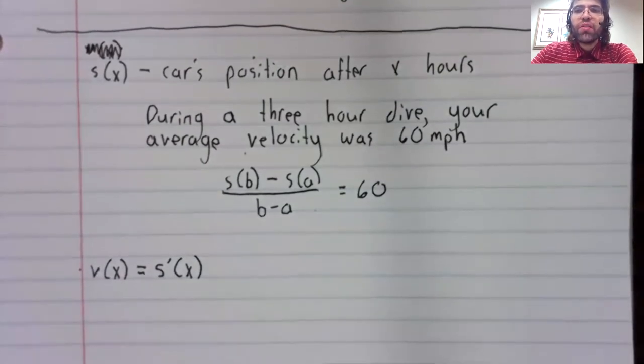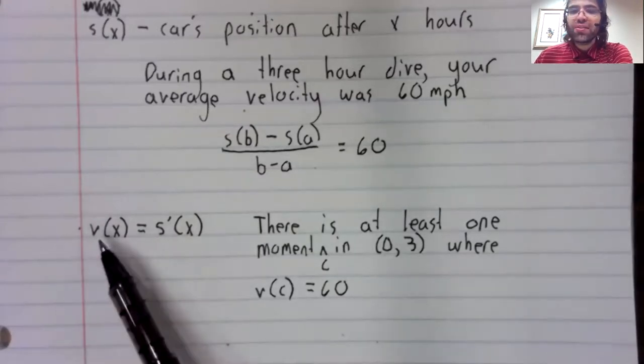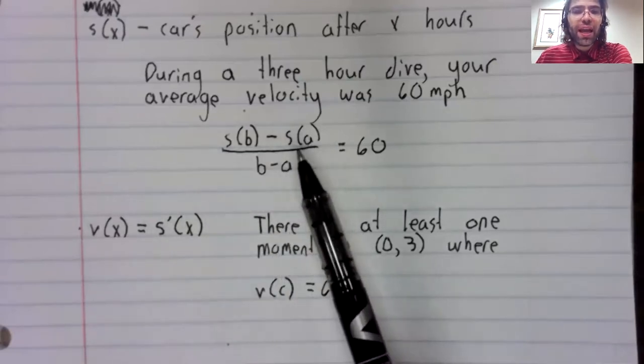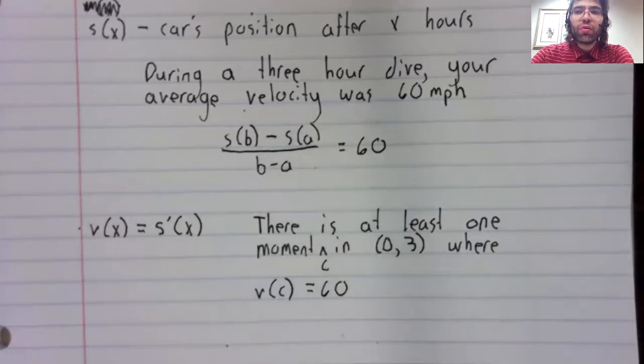And what the mean value theorem says is that there's at least one moment where this exact velocity equals this average velocity. You cannot travel at 60 miles per hour on average without ever traveling exactly 60 miles per hour.